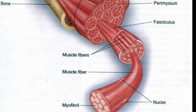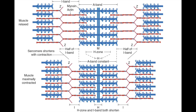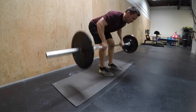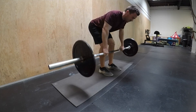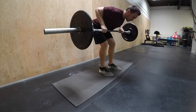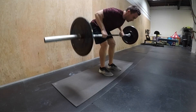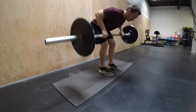The muscle cell consists of myofibrils, which are then divided into sarcomeres. The sarcomere is defined as the basic contractile unit of skeletal muscle. Now we will focus on the anatomy of the muscle cell and how contraction actually occurs.